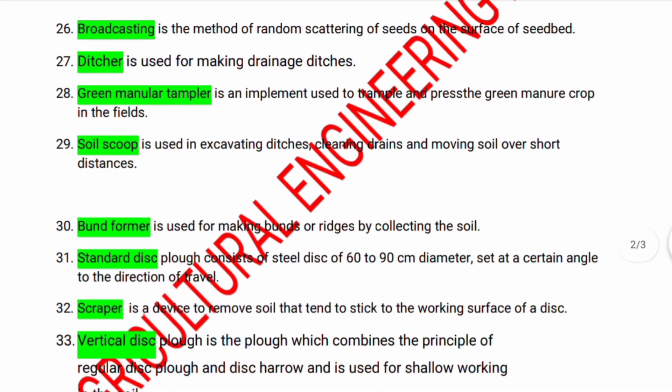Green manure trampler is an implement used to trample and incorporate the green manure crop in the fields. Soil scoop is used for excavating ditches, cleaning drains, and moving soil over a short distance. Bund former is used for making bunds or ridges by collecting soil.